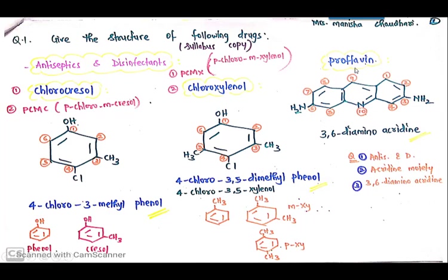Proflavin is the antiseptic and disinfectant agent which contains acridine moiety. The type of questions asked in the exam are: name the antiseptic and disinfectant which contains acridine moiety. Or directly the IUPAC name will be asked like 3,6-di-amino-acridine, and from this name you are supposed to write the structure.